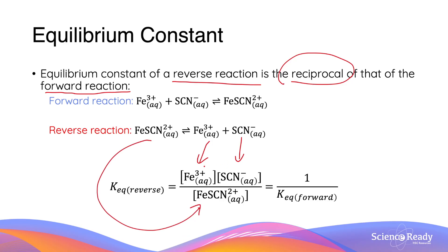Comparing this expression to the one from before, this is exactly the reciprocal. Therefore, the equilibrium constant of the reverse reaction equals 1 over the Keq of the forward reaction.